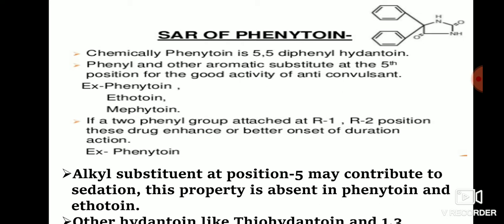If two phenyl groups are attached at the fifth position, these drugs exhibit better onset and duration of action. Example: phenytoin, which is 5,5-diphenylhydantoin. Phenyl group as well as any aromatic substitution at the fifth position is good for anticonvulsant activity.